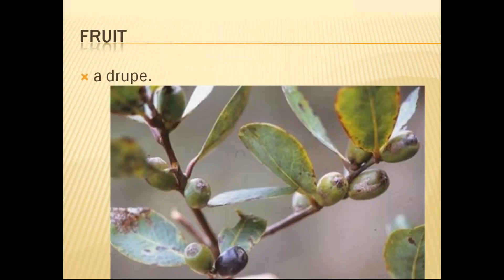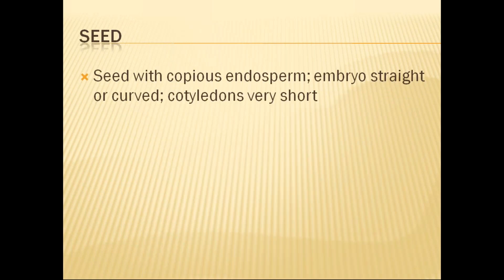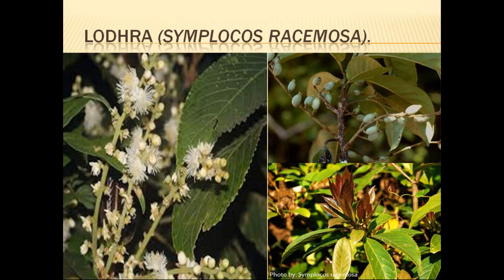The fruit is drupe. Comparing across families: Myrsinaceae has drupe, Sapotaceae has berry, and Symplocaceae also has drupe fruit. The seed has copious endosperm and the embryo is straight or curved with very short cotyledons. One very important and highly consumed drug from this family is Lodhra — the root bark or roots are used. The botanical source is Symplocos racemosus. Lodhra is a very popular drug used in Ayurvedic practice and is also present in Murchana taila and various other oil preparations.